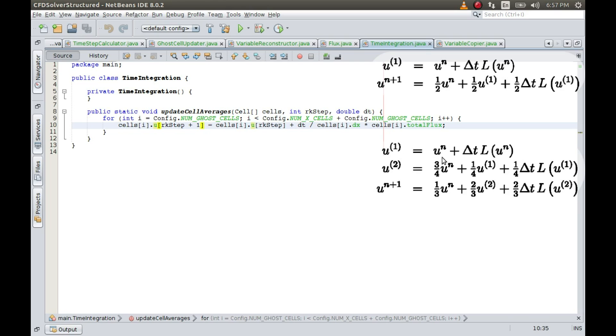In case of three-step Runge-Kutta method, u^n will be stored at index zero, the intermediate value will be stored at array index one, this will be stored in array index two, and the value of u^(n+1) will be stored at array index three, and so on.